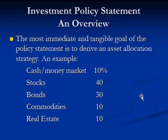The most tangible goal of an investment policy statement is to derive an asset allocation and the strategy behind it. A typical asset allocation lists the major asset classes, defined by the type of risk they're exposed to. The first and most liquid is cash or money market, which may be 10% of your portfolio — assigned for emergency and liquidity purposes.